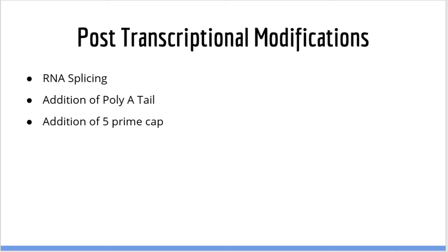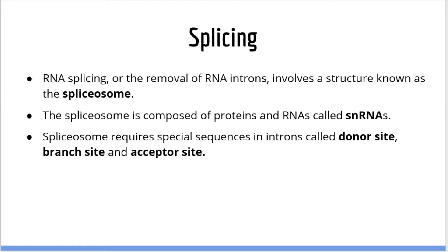Now let's switch gears and talk about post-transcriptional modifications. There are three types you must be familiar with: RNA splicing, addition of the poly-A tail, and addition of the 5' cap. RNA splicing, or the removal of RNA introns, requires the help of a large protein and RNA structure called the spliceosome. The spliceosome is composed of both proteins and non-coding RNAs called snRNAs, or small nuclear RNAs. In order for the spliceosome to identify and know where to cleave introns, special sequences inside introns are recognized: the donor site, the branch site, and the acceptor site.